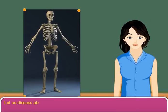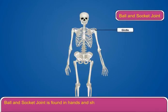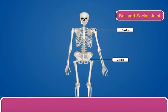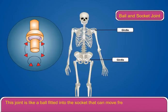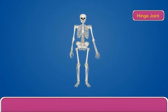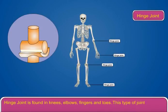The ball and socket joint is found in the hands and shoulder girdle, and in the legs and hip girdle. This joint is like a ball fitted into a socket that can move freely within the socket.